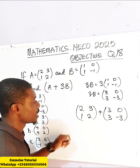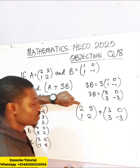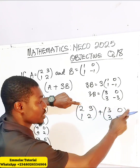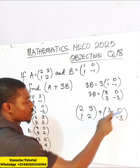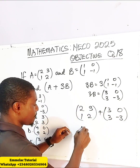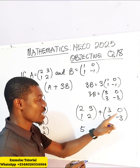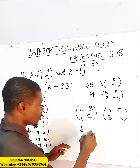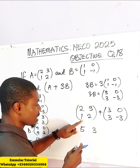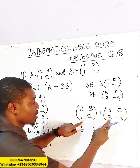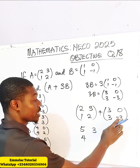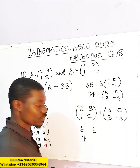So what we need to do here is take 2, which is the first on this row, and add it with 3, which is also the first on this row. So 3 plus 2 gives us 5. Then 3 and 0, we have 3, because 3 plus 0 is 3. Then 1 plus 3 gives us 4. And 2 plus negative 3 gives us negative 1.